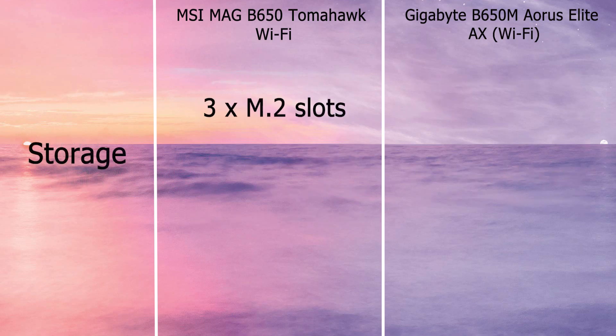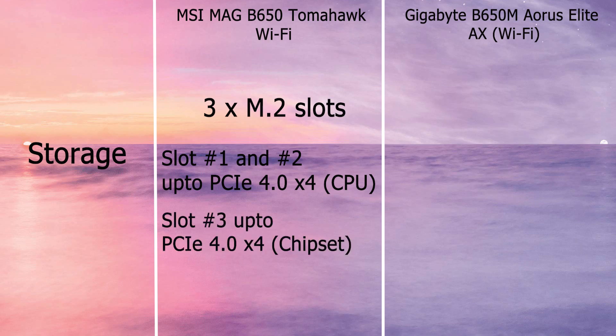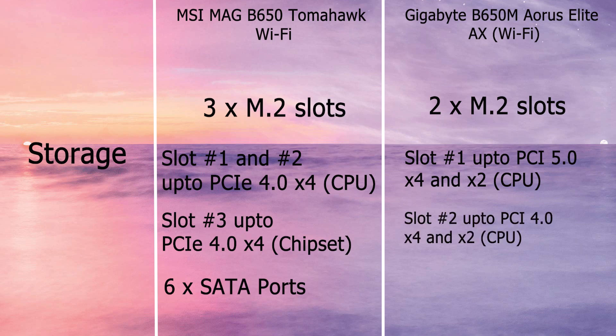In terms of storage, MSI has three M.2 slots. Slots 1 and 2 support up to PCIe 4.0 x4 mode from the CPU, and Slot 3 supports up to PCIe 4.0 x4 from the chipset. It also has six SATA ports. Gigabyte offers two M.2 slots: the first supports up to PCIe 5.0 x4 and x2 mode from the CPU, and the second supports up to PCIe 4.0 in x4 and x2 mode from the CPU. It comes with four SATA ports.